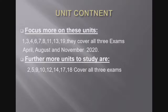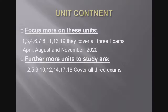Let's look at the unit contents you need to focus on more. The Study Guide for Educational Research 2 has 19 units. It basically focuses on quantitative research and qualitative research, and how to carry out those research types. Focus more on Units 1, 3, 6, 7, 8, 11, 13, and 19. You can also read more about Units 2, 5, 9, 10, 12, 14, 17, and 18.